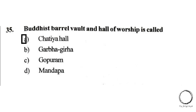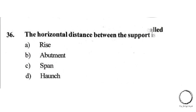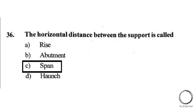Moving on: the horizontal distance between supports is called: A) Rise, B) Abutment, C) Span, D) Haunch. The right answer is C, Span.